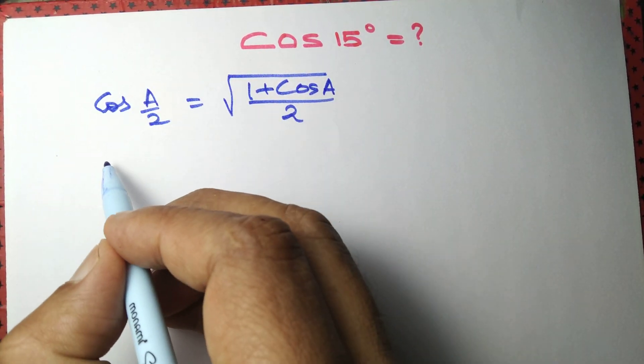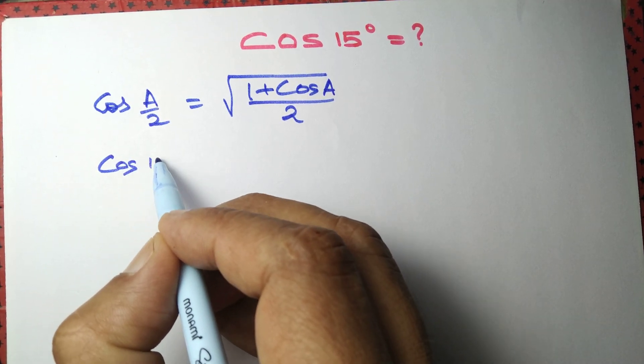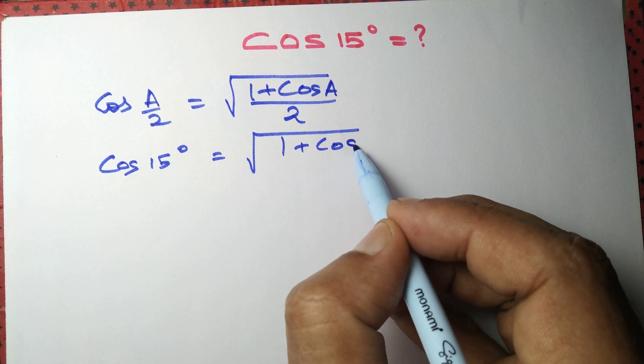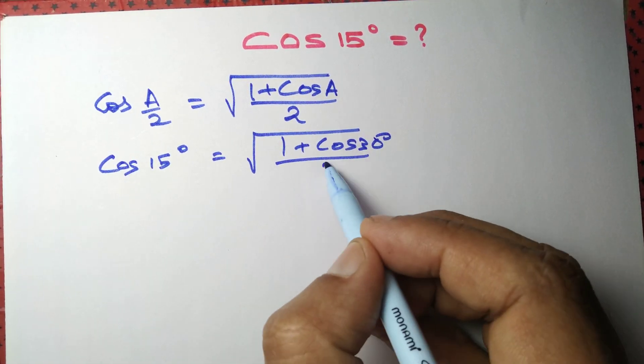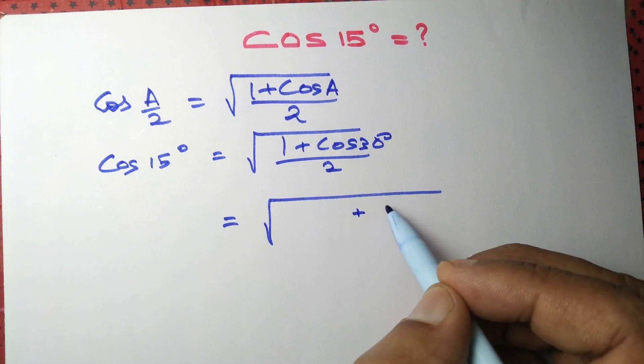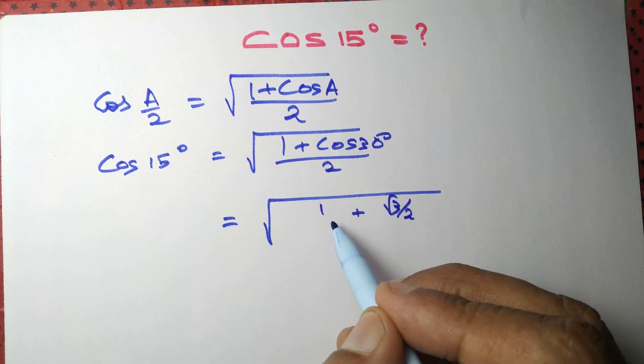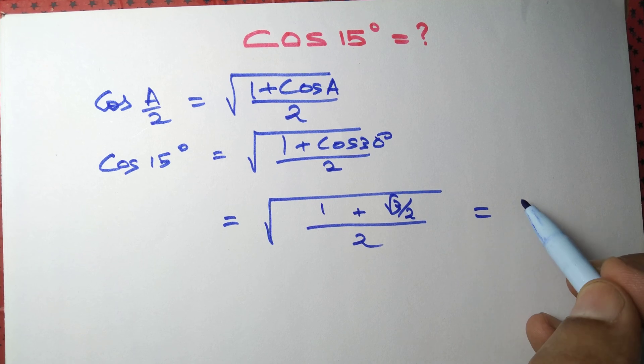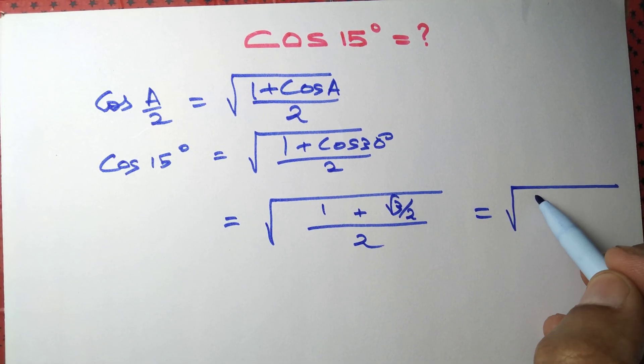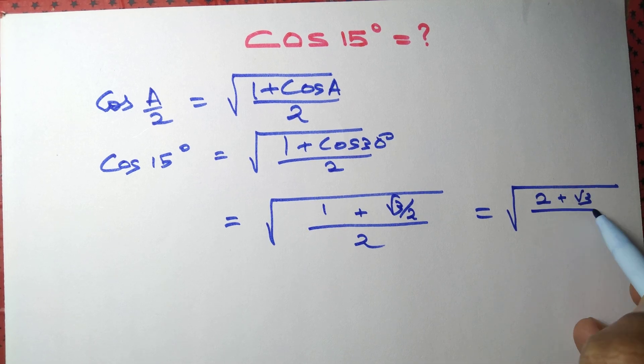Take A = 30°, so cos 15° equals the square root of (1 + cos 30°)/2. Since cos 30° = √3/2, this simplifies to √((2 + √3)/4).